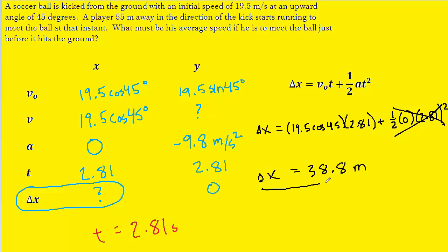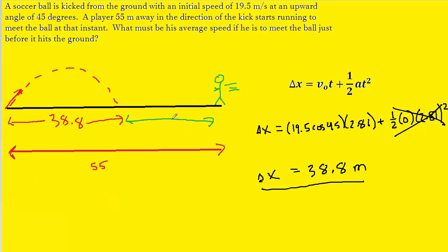So we now have the displacement of the soccer ball and we can use that to finish off this question and calculate the displacement of the runner and then find his average velocity. Notice to get the displacement of the runner we simply have to take the 55 meters that was given in the question and subtract out the displacement of the soccer ball. That would allow us to obtain this displacement here, which would turn out to be 16.2 meters.